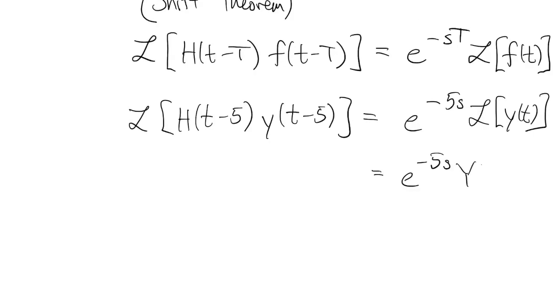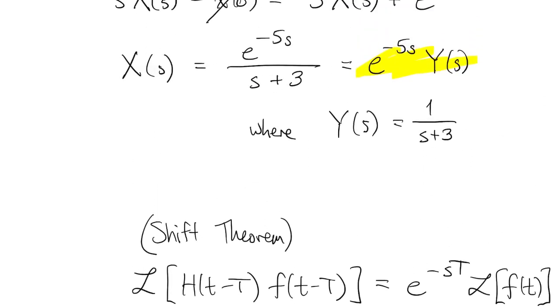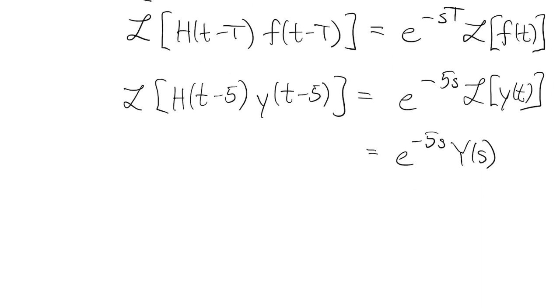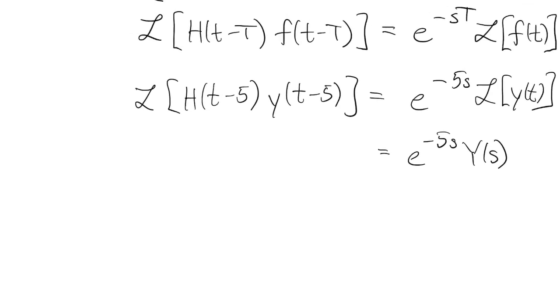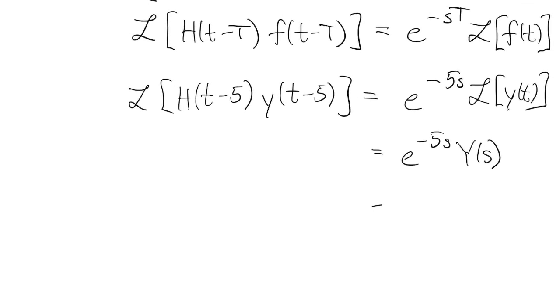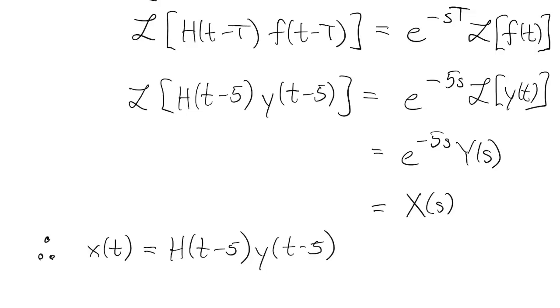So in fact, this thing here is actually e to the minus 5s times capital Y of s, and that, I said, is equal to capital X of s. So since the transform of the thing on the left is equal to the transform of little x, we conclude that x of t is this thing in the brackets, h of t minus 5 times y of t minus 5.